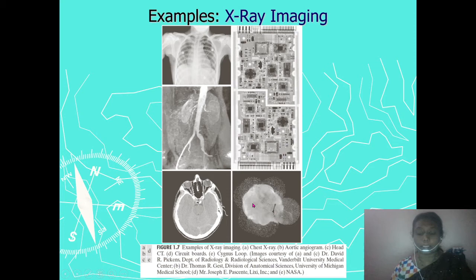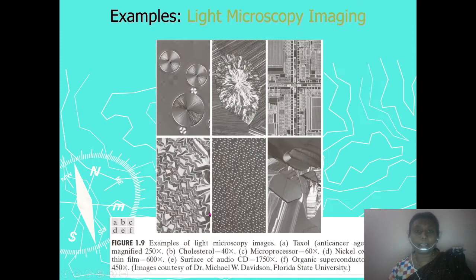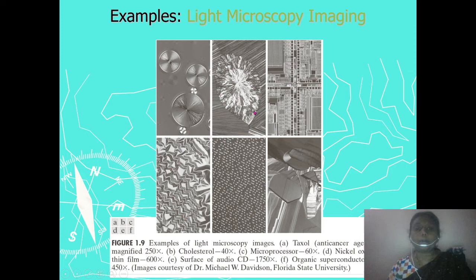When the source is ultraviolet imaging, the images look like this — showing a normal cone, a smart cone, and a sinus loop. With light microscopy as the source, images include taxol, cholesterol, and a microprocessor. This is how images are produced by the light microscopy source.